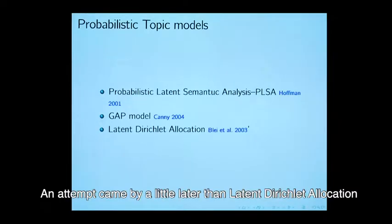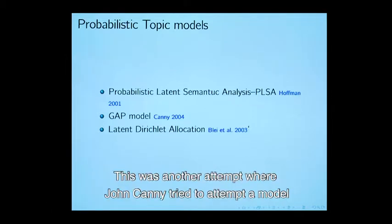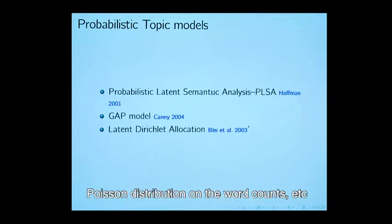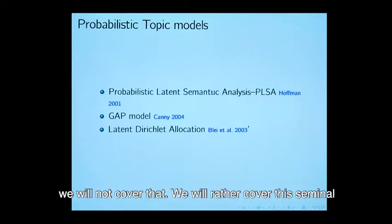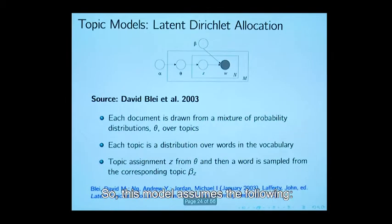An attempt came a little later than latent Dirichlet allocation, which is known as Gamma Poisson model. This was another attempt where John Kenny tried to attempt a model with some different data distribution, namely Poisson distribution on the word counts. We will not cover that. We will rather cover this seminal paper by David Blei et al, known as latent Dirichlet allocation.